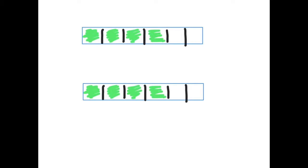So let's start with a very simple bar model of a fraction here. Counting the number of pieces we've got: one, two, three, four, five, six equal groups. So that's going to be our denominator — six equal groups. And we've shaded in one, two, three, four equal groups. So that's our numerator. So we've got four sixths. What we need to do here is simplify this fraction into its simplest form.